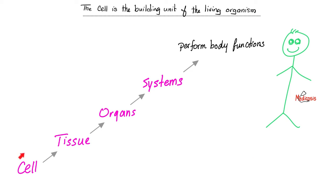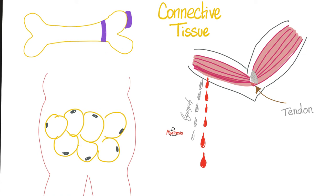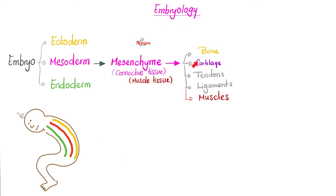The building unit of the human body is the cell. A group of cells will make tissue. We have four types of tissue. Bones are connective tissue. Bones, cartilages, muscles, tendons — all of these are examples of connective tissue. Embryologically speaking, bones came from the mesenchyme, which came from the mesoderm.